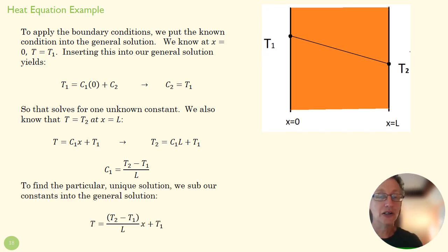So we sub those now known constants into our equation, and we have our particular solution here. So given what, assuming we know what T1 and T2 are, those are our boundary conditions, we now have a particular unique solution to this heat equation problem.